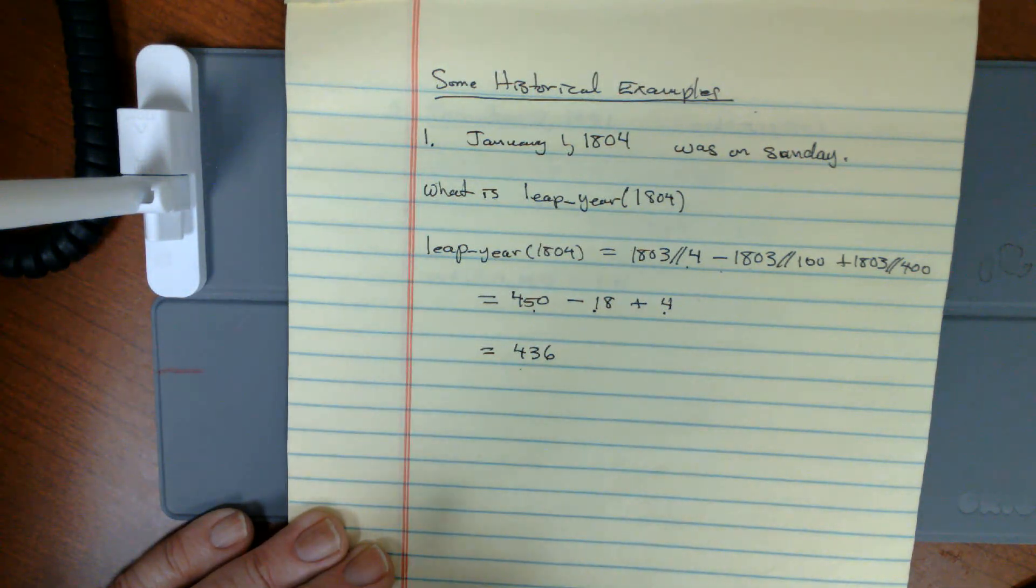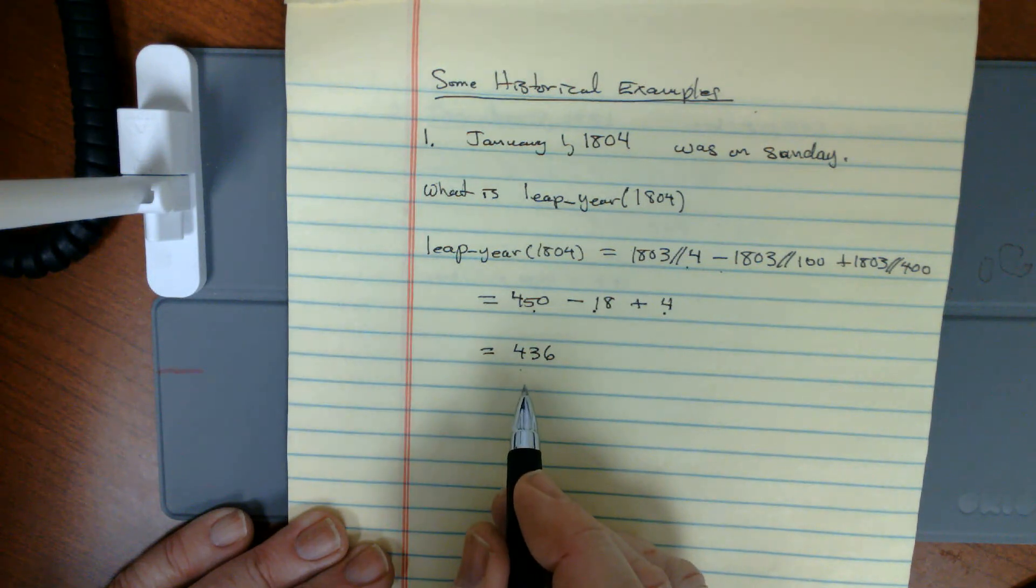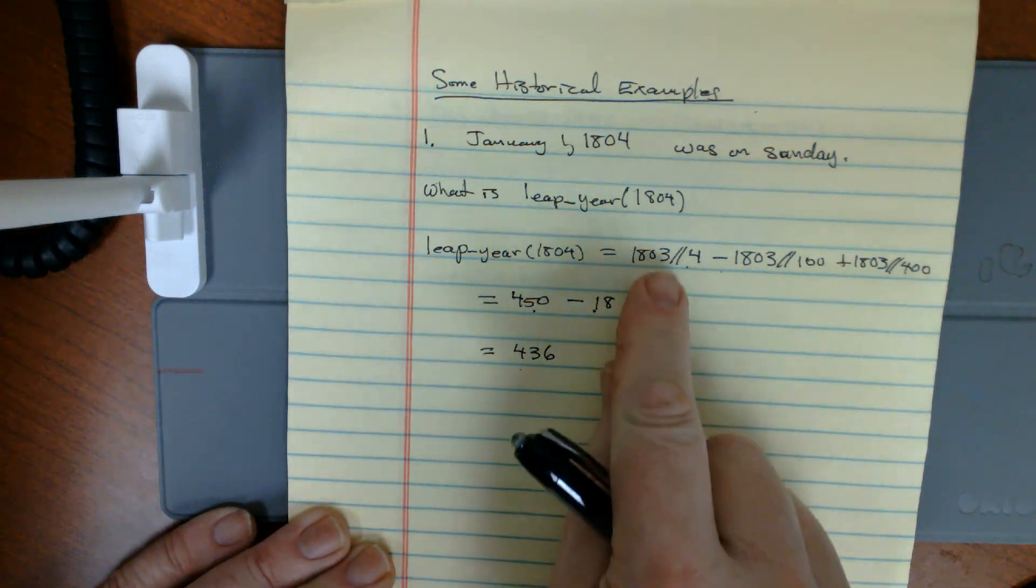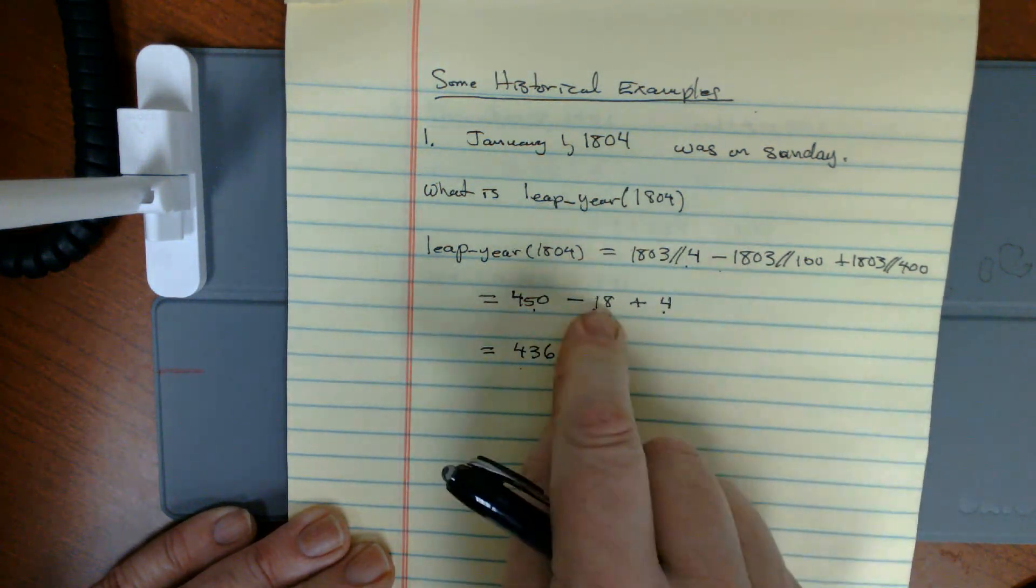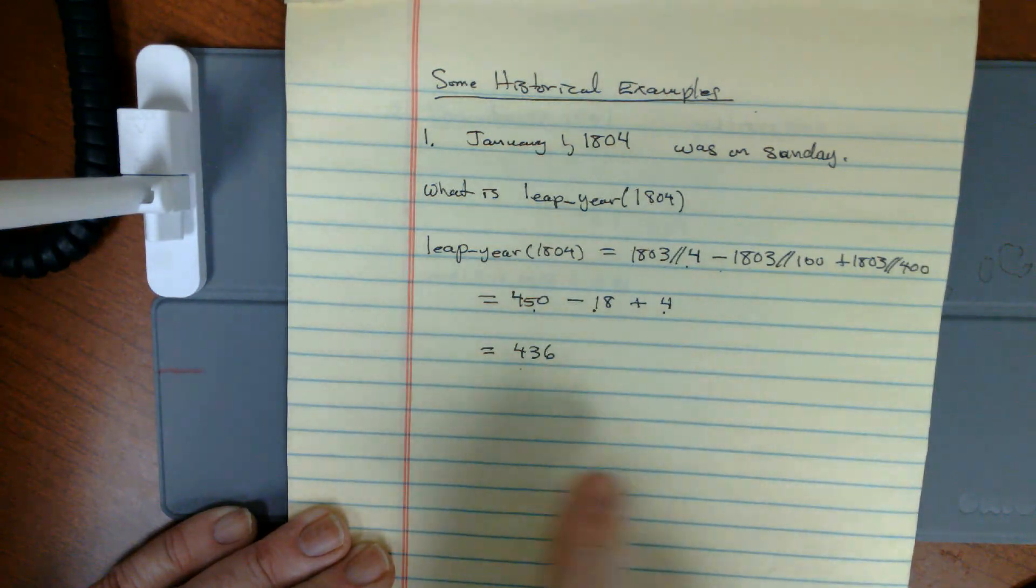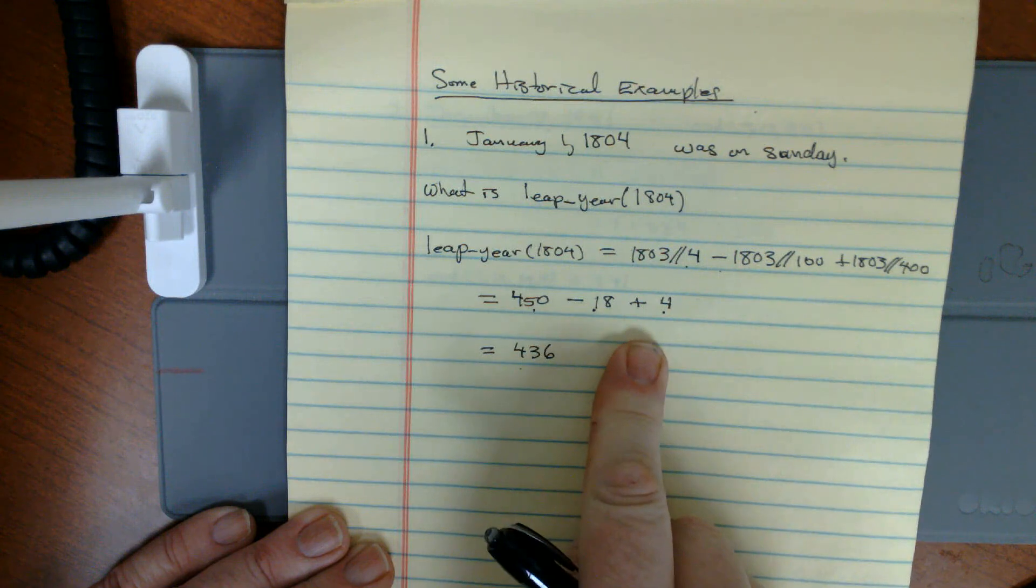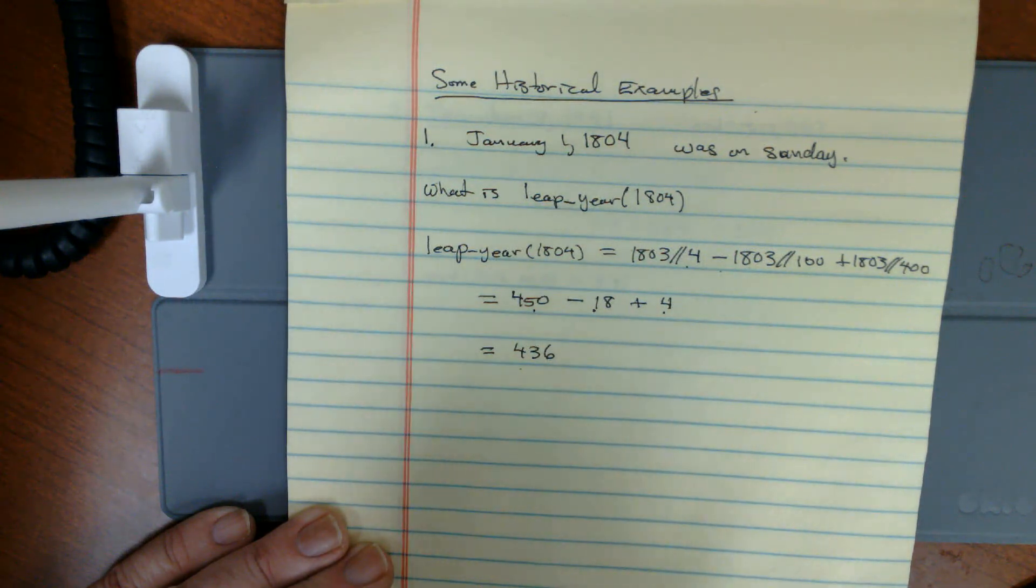You do the arithmetic on that and you get 436. Now, if you want to pause now, take out your calculator and verify that you know how to get these numbers, do it. Because if you don't know how to get from here to here, we need to have a good talk. Just pause, check it out, and then I'll continue.